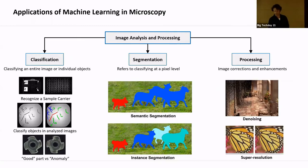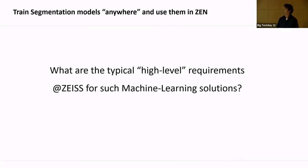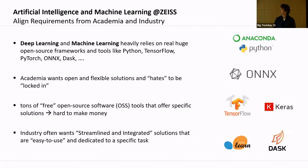Let's dive into some details. What are typical requirements for machine learning solutions at Zeiss? We have customers from industry — automotive, pharma — but also hardcore academia scientists who probably know more about machine learning than we do. They all use the same microscopes and want the same AI-based solutions. One of our hardest tasks is how to reconcile those different requirements.